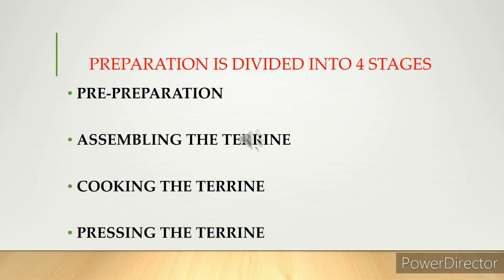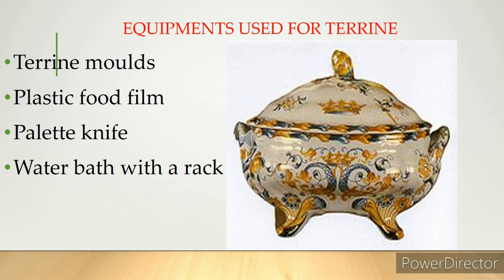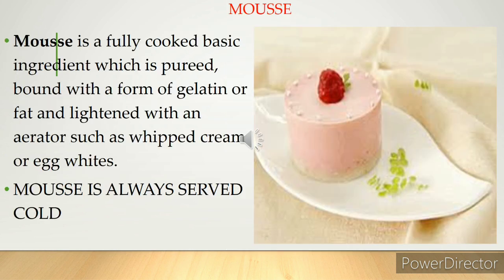Cooking of the terrine is done in a water bath for around 30 minutes. Equipment used includes a terrine mold, plastic food film, palette knife, and a water bath with a rack. The mold is half-filled with meat to avoid air pockets, given a double water bath in the oven for around 30 minutes, and then finally pressed.